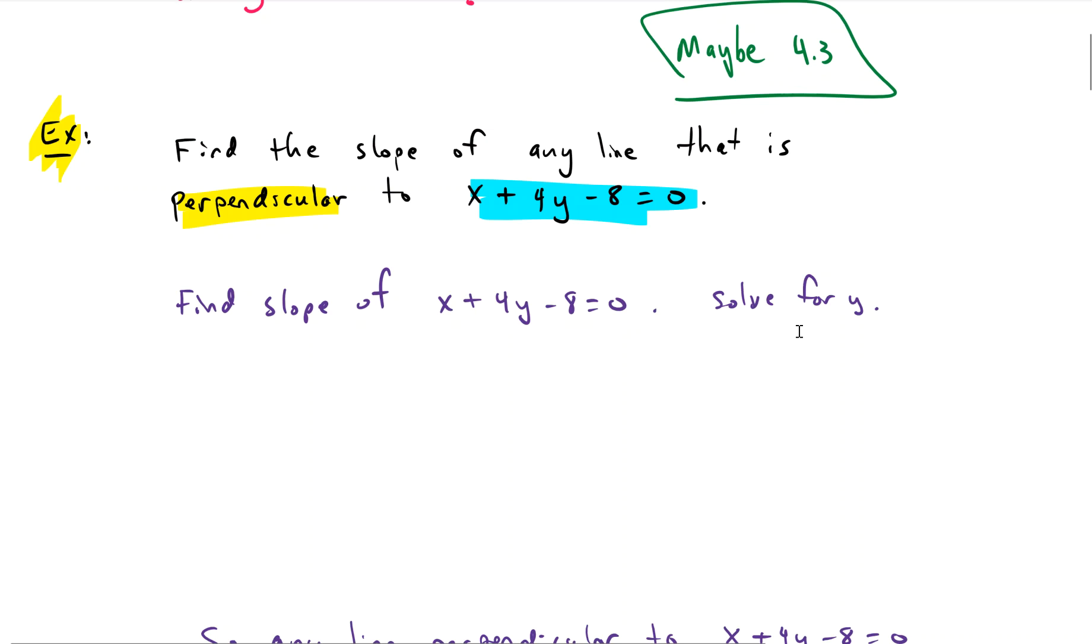So let's solve for y. The first thing we want to do is we've got to figure out what is the slope of the line that we're given. So we're given this line right here. We want to find out what the slope is because we know that the slope of a perpendicular line is going to be the negative reciprocal of the slope of the line that we're given. So let's find out what the slope is.